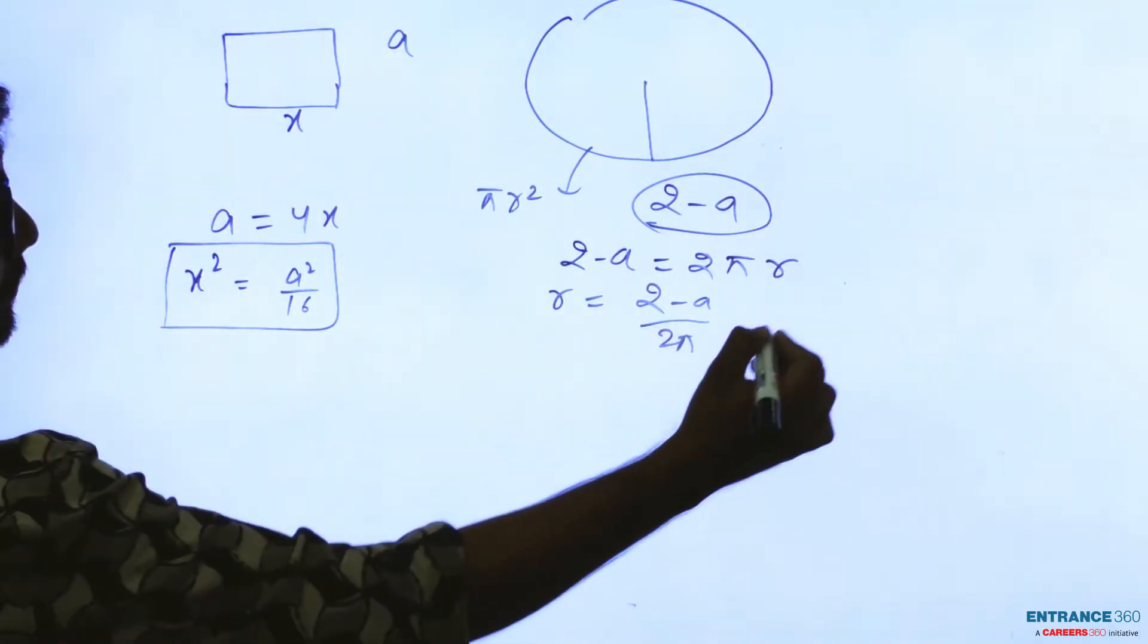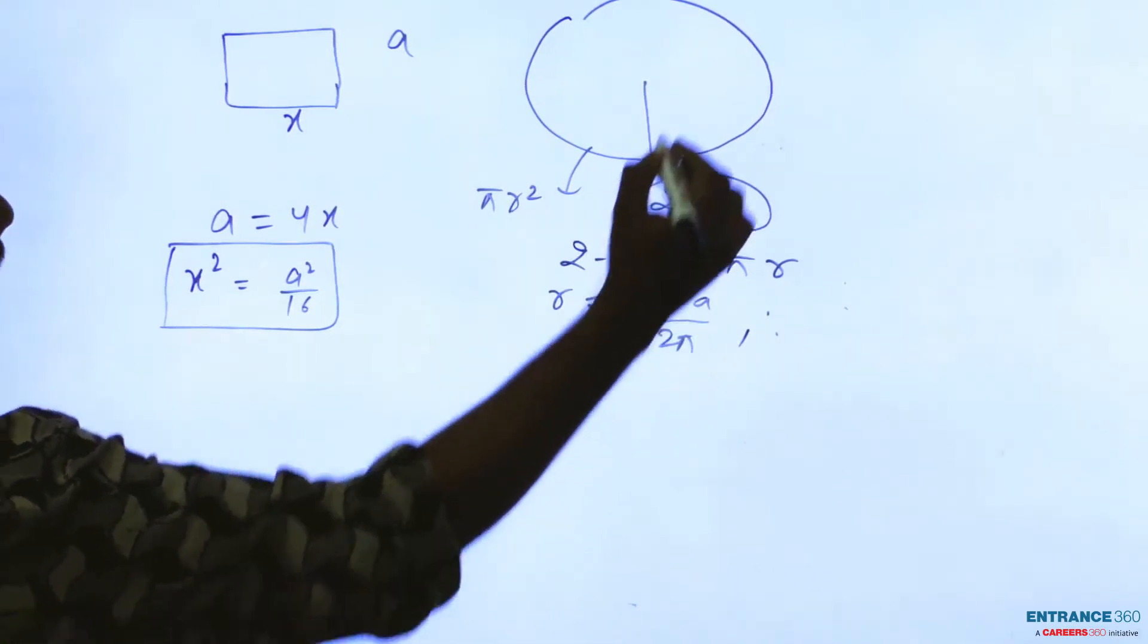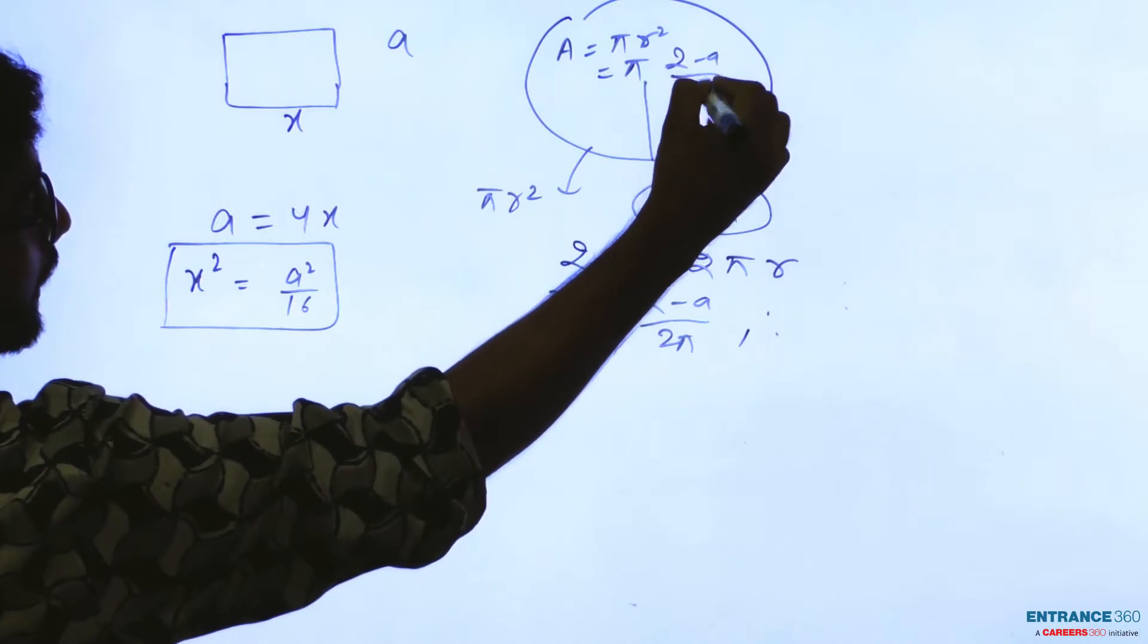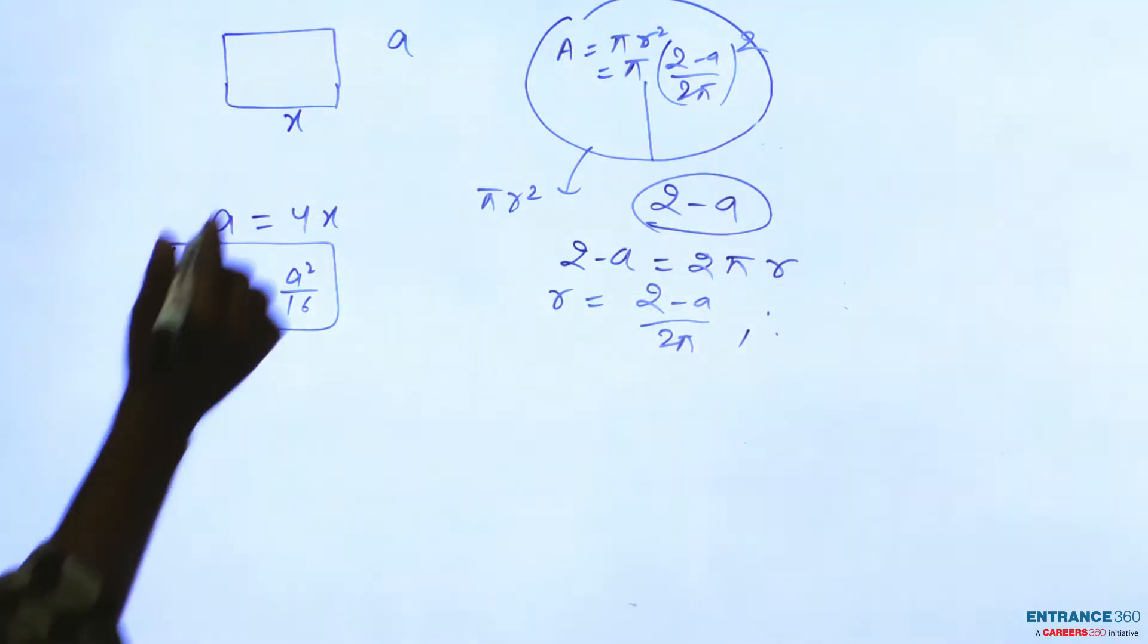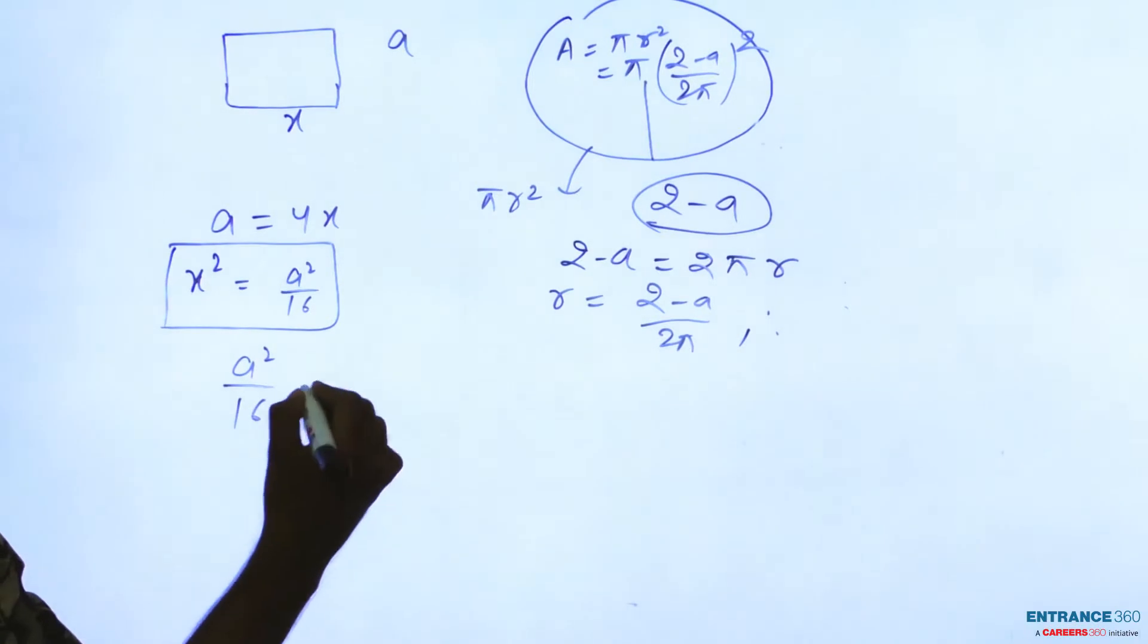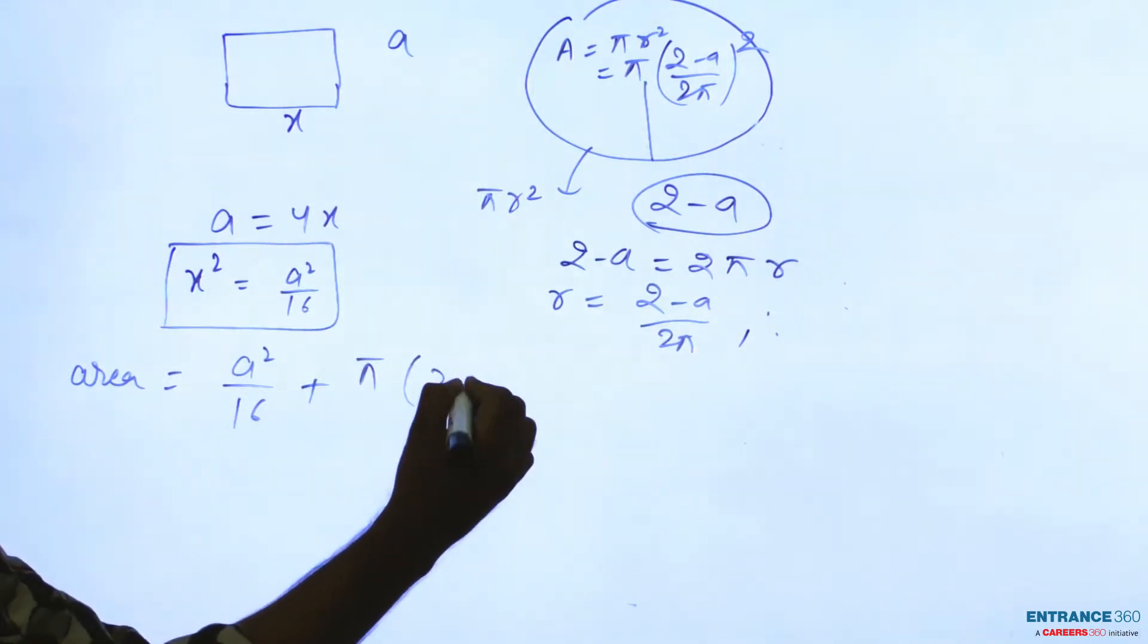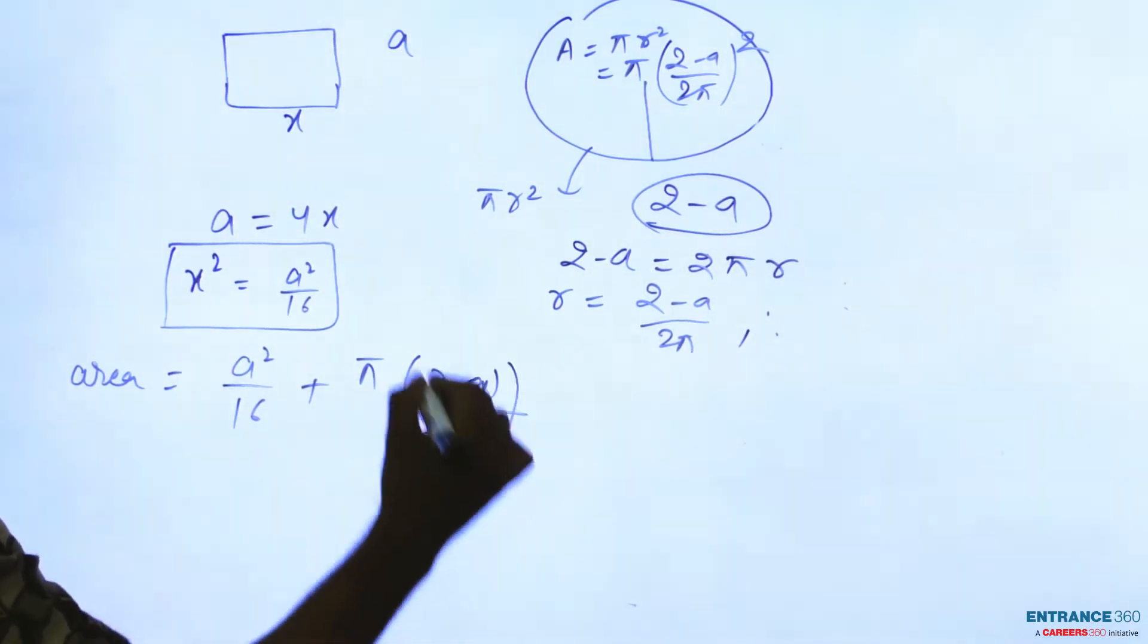Then you can write here to find the area of the circle pi r square means this area of the circle r will be 2 minus a square by 2 pi. Then summation of these areas means a square by 16 and pi 2 minus a by 2 pi whole square.